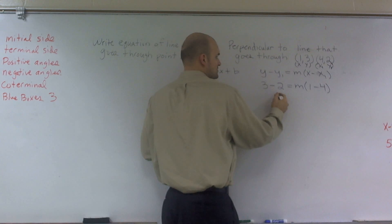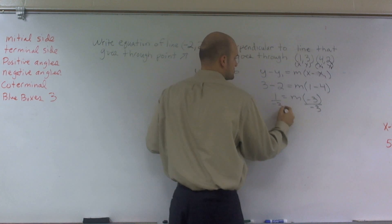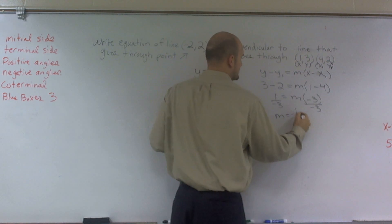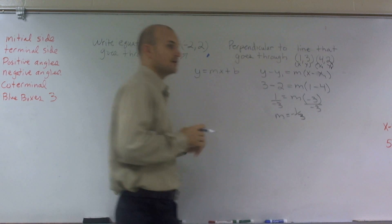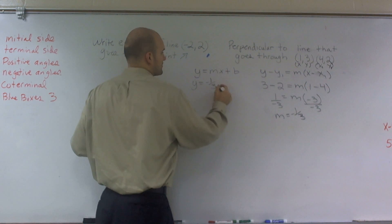All right, so then 3 minus 2 is 1 equals m times negative 3. Divide by negative 3 on both sides, I get m equals negative 1 third. So therefore, now my slope is y equals negative 1 third x.